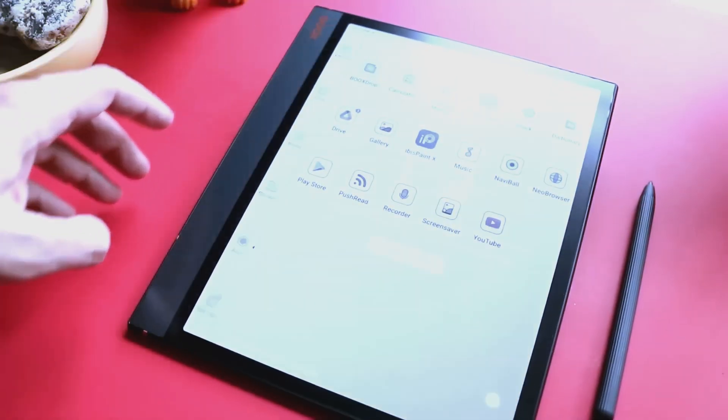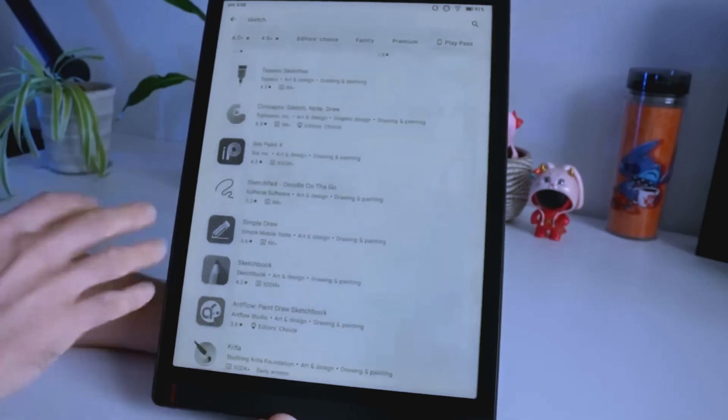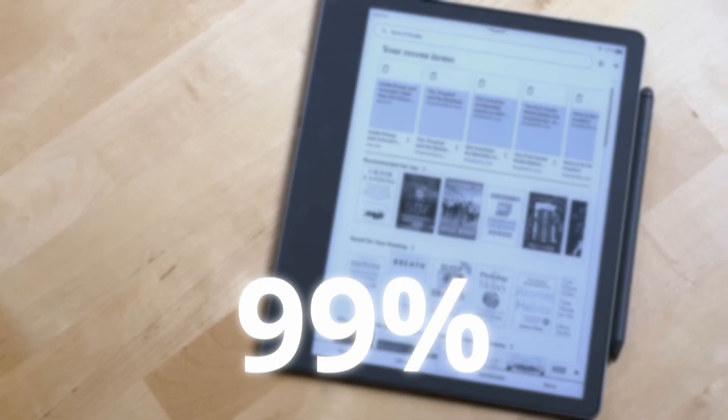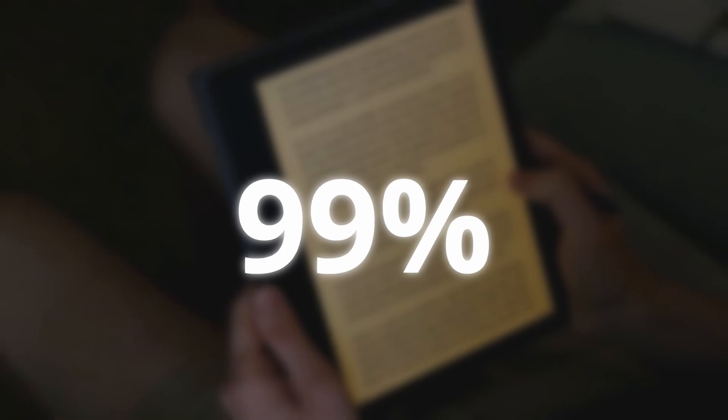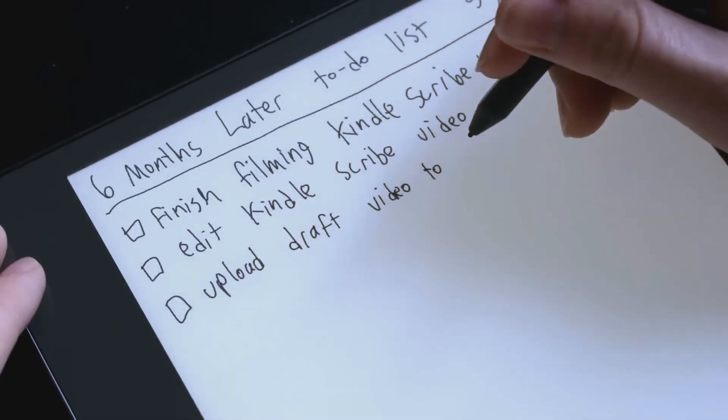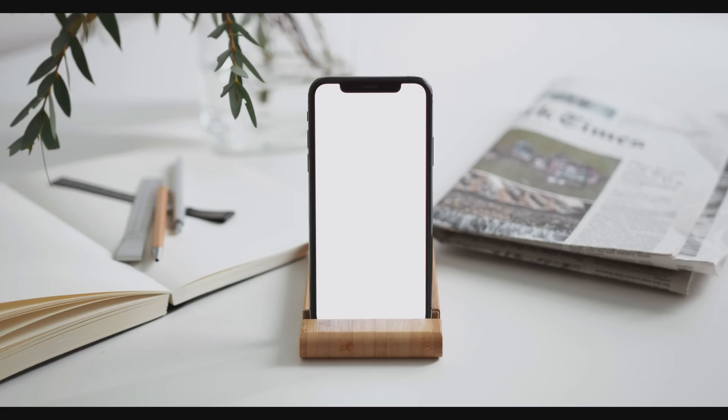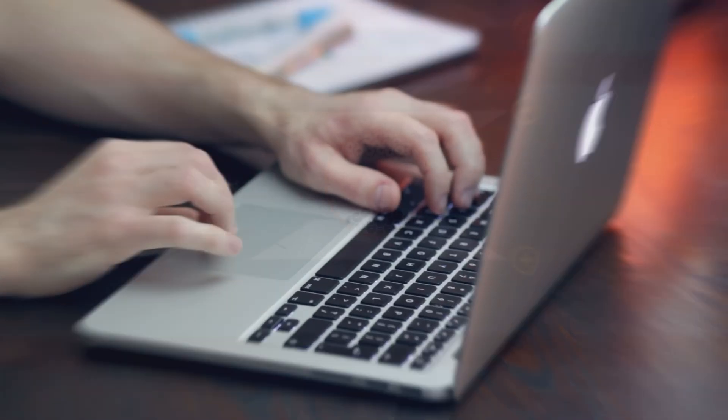Screens like those used in Amazon Kindle and other e-readers are some of the most energy efficient displays in the world because they spend 99% of their time turned off. But how do they manage to stay off while still displaying an image? And if they are so energy efficient, why aren't they used for smartphone or laptop screens?